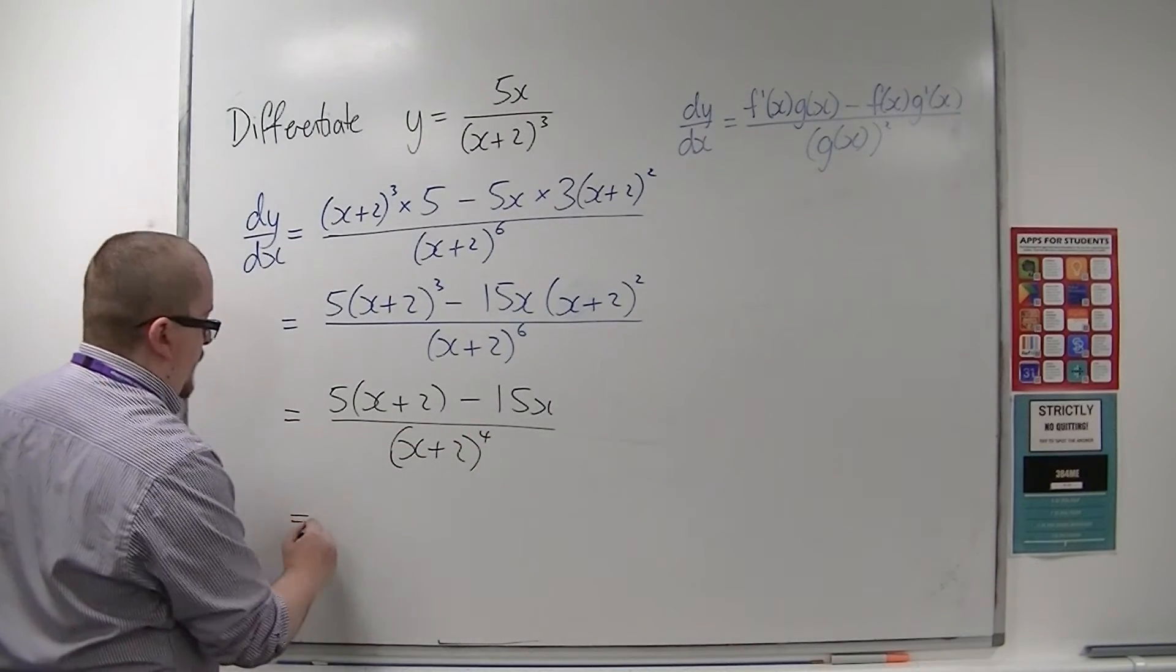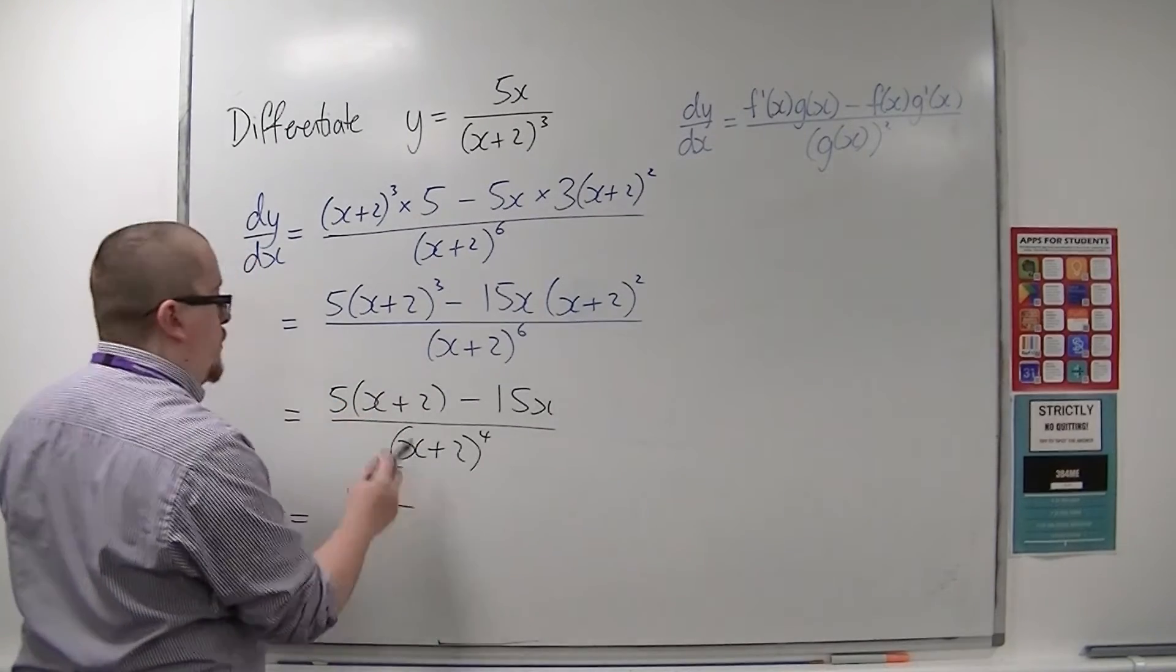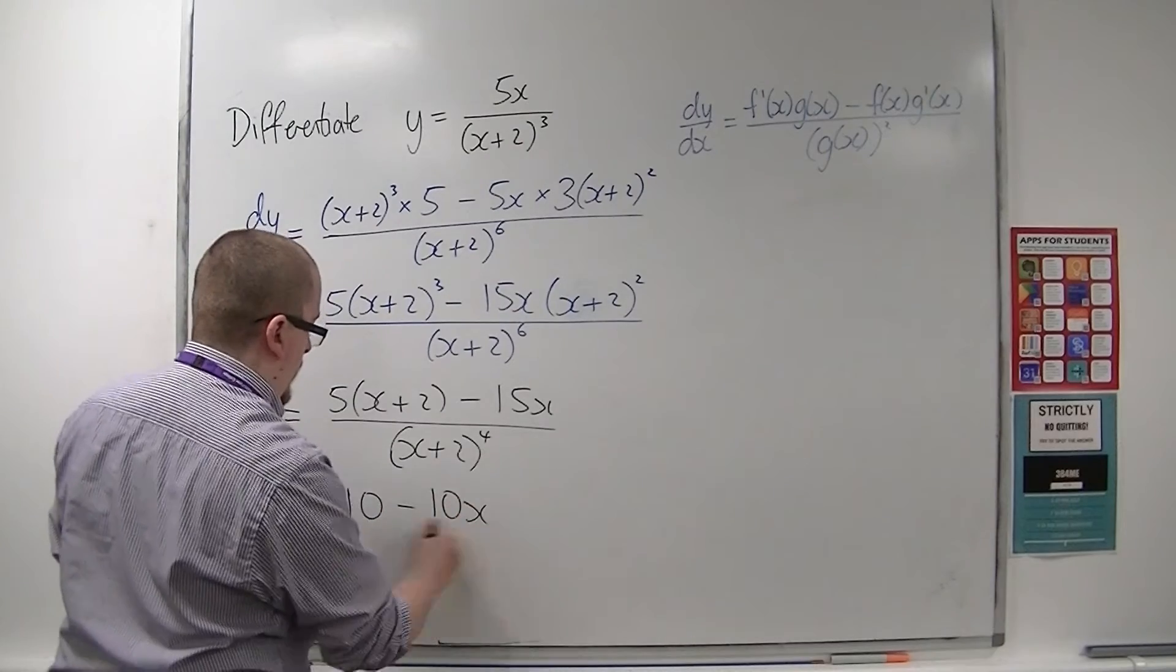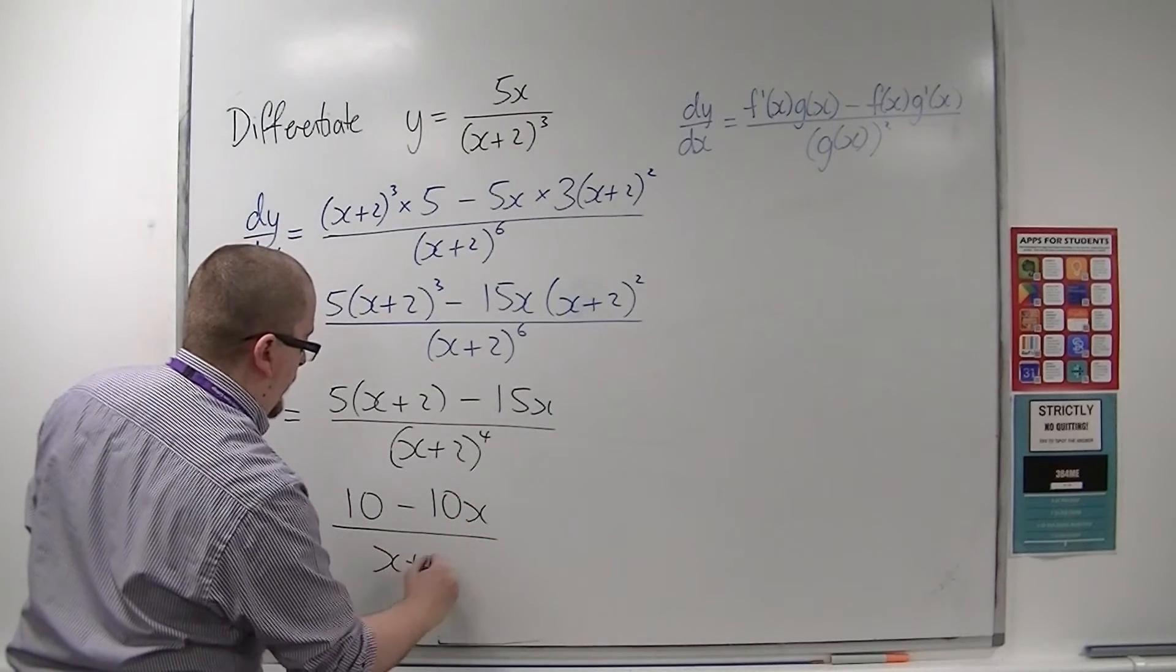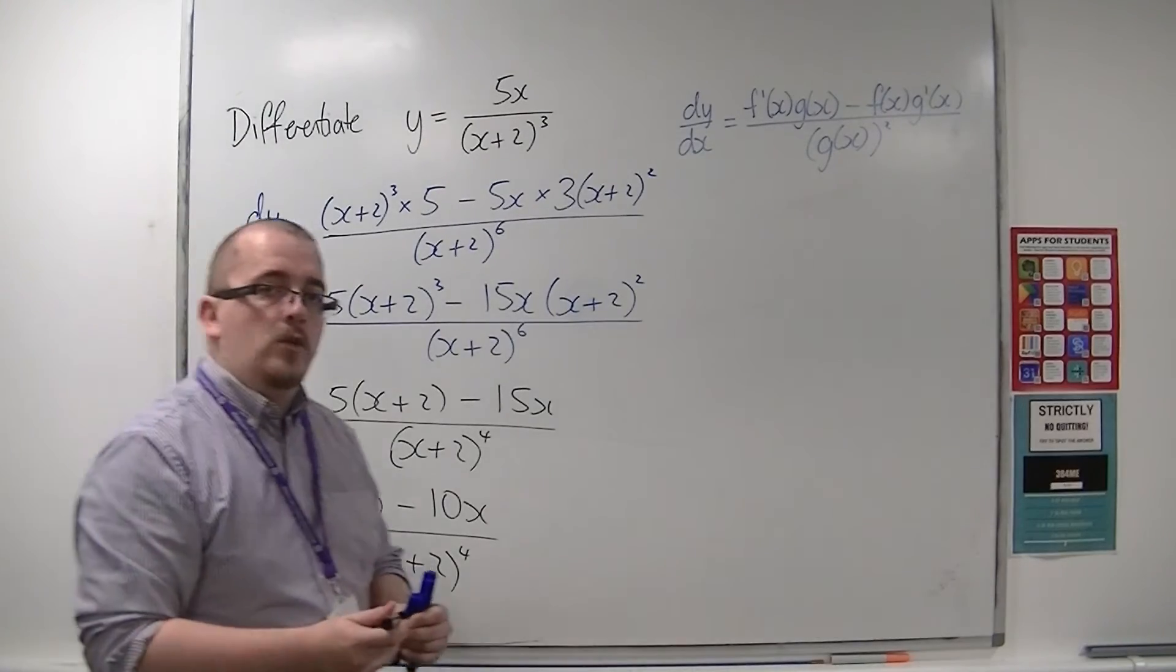If I simplify this, we have 10, and 5x minus 15x gives -10x, so 10 - 10x over (x+2)⁴. And that's much easier to work with.